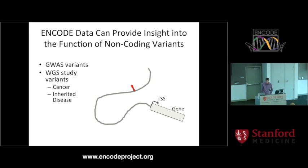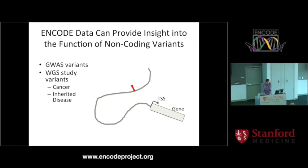Everyone's probably pretty clear on the general idea, but let's go over it. ENCODE data can provide a lot of insights into the function of non-coding variants. People have used it to look at GWAS variants — if you have a particular tag SNP from a GWAS study, there may be a bunch of variants in linkage disequilibrium with that variant, and you can look through ENCODE data to find variants that may be functionally relevant. There have also been studies on diseases like cancer, where we looked for mutations that were recurrent across whole genomes, across patients.